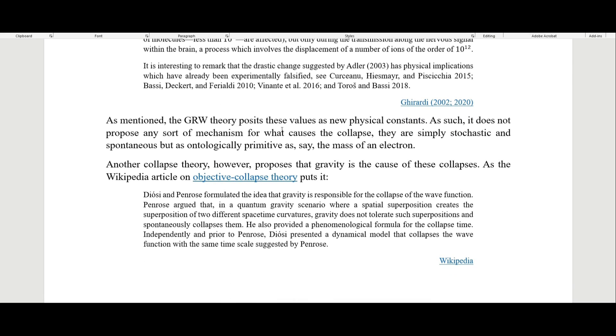As mentioned, the GRW theory posits these values for sigma and tau as new physical constants. As such, it does not propose any sort of mechanism for what caused the collapse. They are simply stochastic and spontaneous, but as ontologically primitive as, say, the mass of an electron.